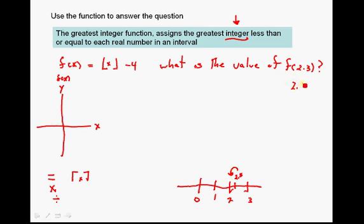Let's take a look at 2.8. Suppose it was 2.8. 2.8 would be right here. And again, the greatest integer less than the number we're talking about is also 2.